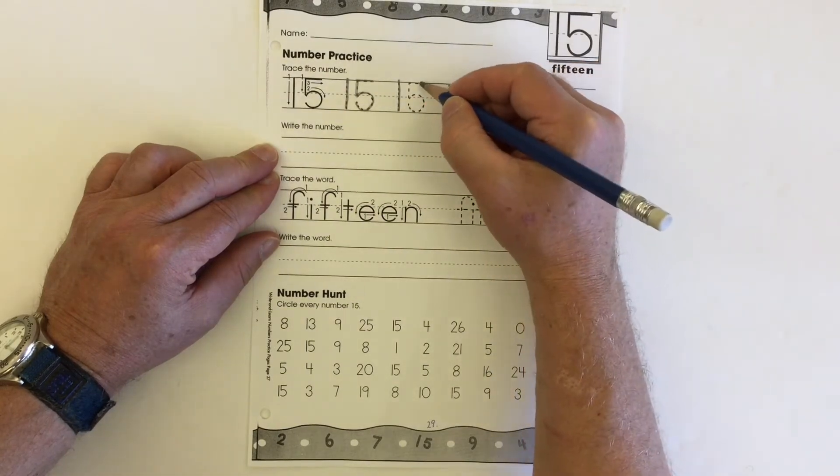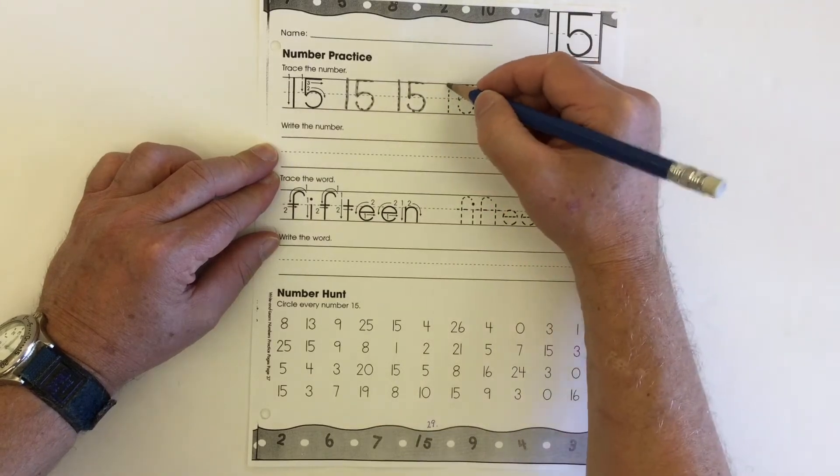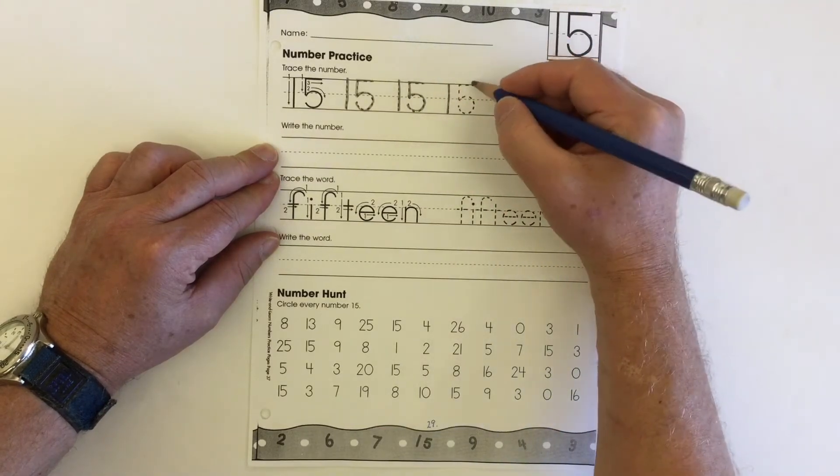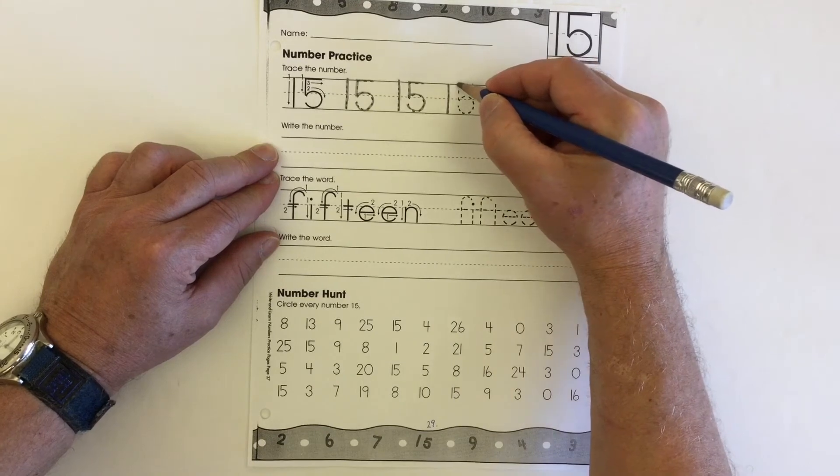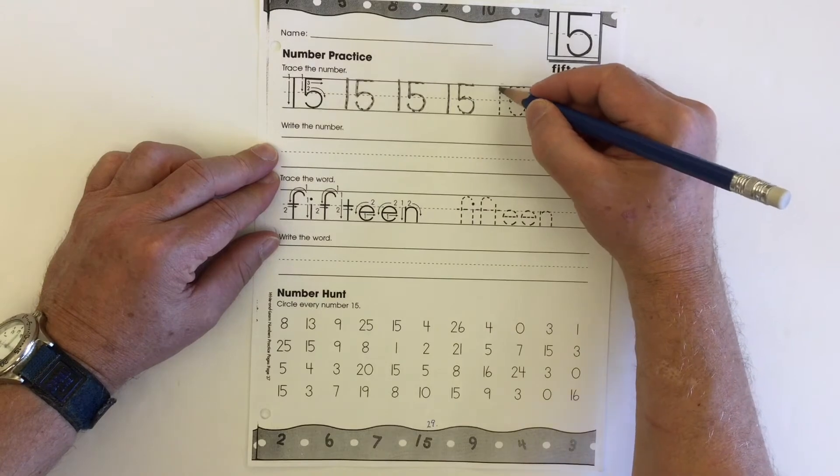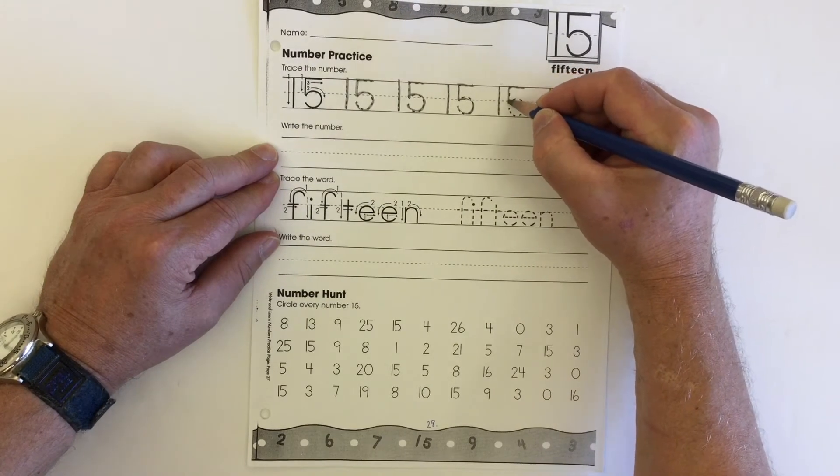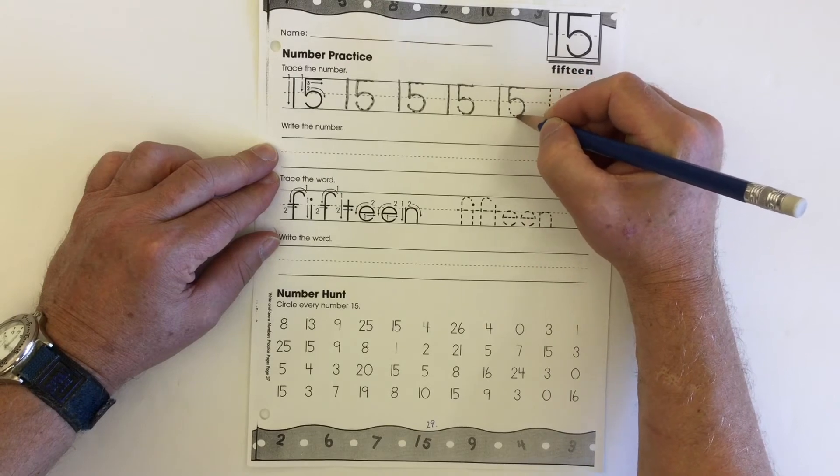So we have our one from top to bottom, and our five goes across, down to the middle, circle around. One, five goes across, down to the middle, and then circle around, touching the bottom.